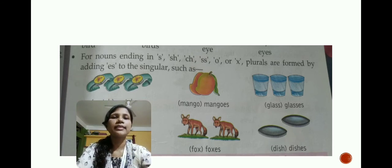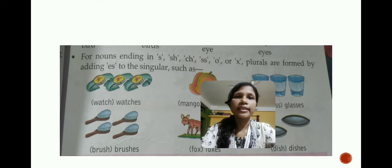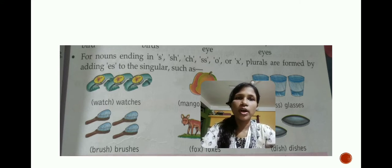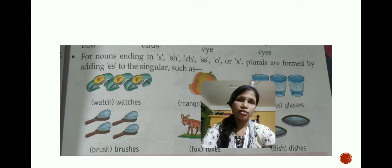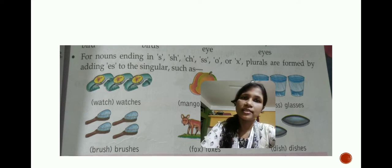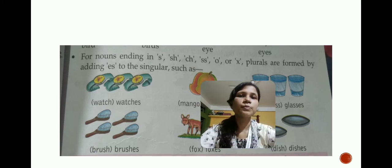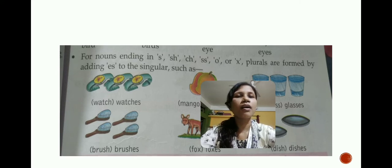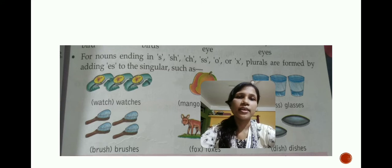Let us see examples of this rule. First: 'watch' — it ends in 'CH,' so we add 'ES' and it becomes 'watches.' The next one is 'brush' — it ends in 'SH,' so it becomes 'brushes.'